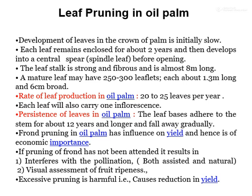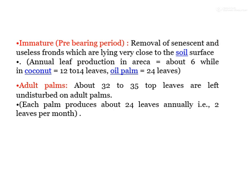The leaf bases adhere to the stem for about 12 years and gradually fall away. Frond pruning in oil palm influences yield and is of economic importance. If pruning of fronds has not been done, it interferes with pollination — both assisted and natural. Excessive pruning is harmful and causes reduction in yield. During the pre-bearing period, senescent and useless fronds lying close to the soil surface are removed. Annual leaf production: arecanut 6, coconut 12–14 leaves, oil palm 12 leaves.